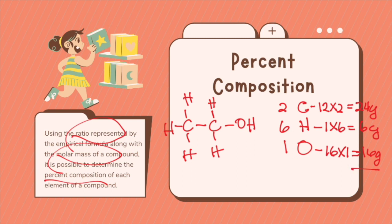If you add all of this — 24 plus 6 plus 16 — you get 46 grams. So the mass of 1 mole of ethanol is 46 grams. To calculate the percent composition of each element, we divide the molar mass of each element by the molar mass of ethanol and multiply by 100.